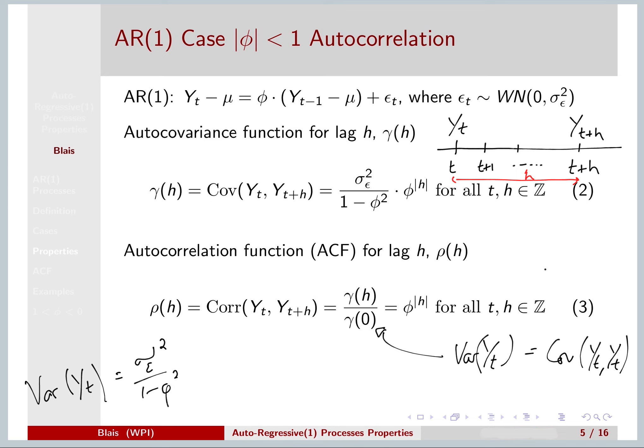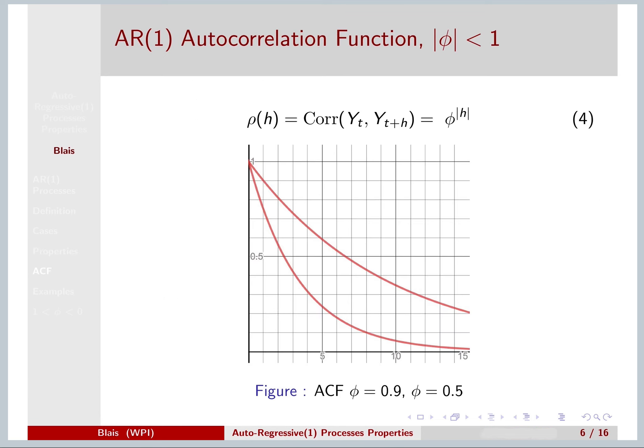And this tells us a lot about this type of process. This is the graph of the autocorrelation function for two different cases when the memory parameter is 0.9 and when phi is 0.5. A correlation has to be between negative 1 and 1 by definition. At lag zero, we have perfect autocorrelation. We have a correlation of 1, which makes sense. Y_t and Y_t is perfectly correlated with each other.